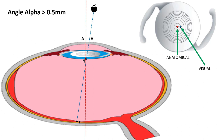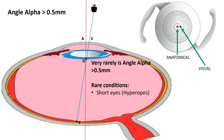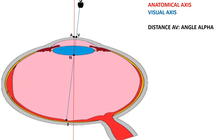This is one of the most important clinical applications of studying angle alpha. Not only multifocal IOLs, but any IOL whose curvature is not equal throughout its diameter, like a simple aspheric IOL, may not give complete satisfaction if angle alpha is high. Very rarely angle alpha is more than 0.5 millimeters. The most common such situation is in high hyperopes, because their anterior-posterior diameter is much lower compared to the lateral diameter, so angle alpha becomes high. Also in cases like pathological myopia and regressed ROP, the fovea may be pulled temporally, resulting in a large angle alpha.